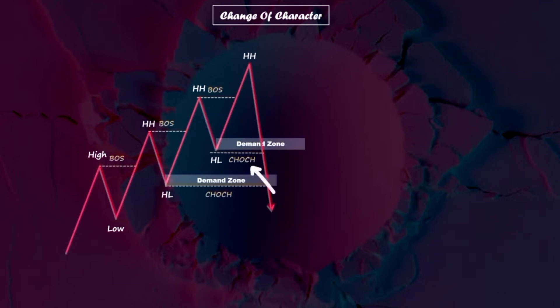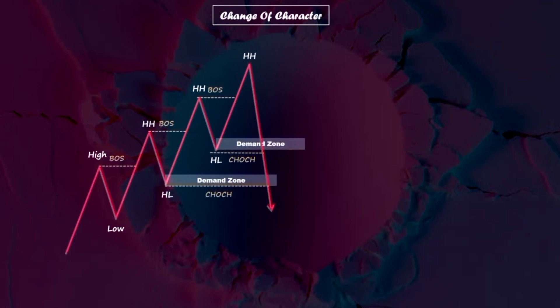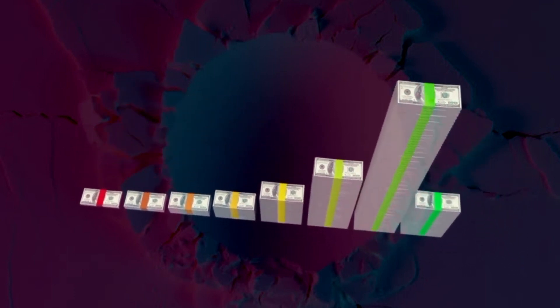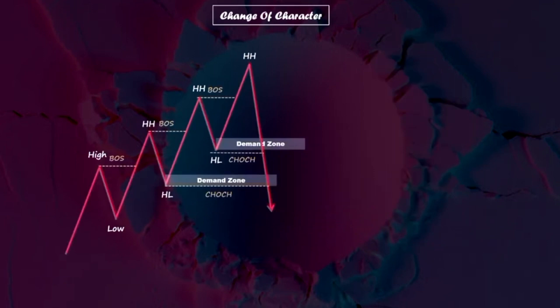The downward momentum continues as the price pushes through the next demand zone and higher low, resulting in a second change of character. This dual change of character suggests an impending shift in market structure. Now we can anticipate the price entering the bearish order flow. Please consider this crucial point: every time a zone breaks, an opposite side zone automatically forms. Since price has broken several demand zones, a supply zone has been created at the extreme.